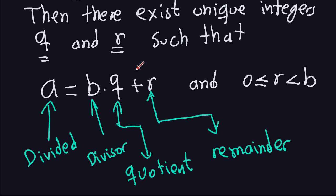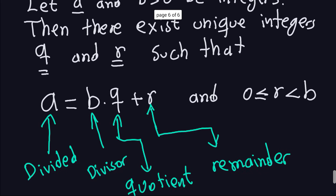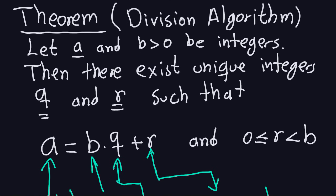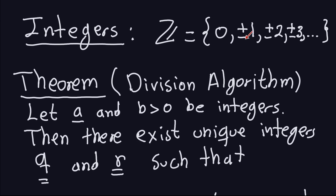There is another property that is very important: the inequality saying that the remainder r is always non-negative and always less than the value of b. That's very important. It's also very important that the quotient q and the remainder r are unique — once you find them by whatever method, anyone using another method must arrive at exactly the same q and r. The integers are just the numbers 0, ±1, ±2, ±3, and so on.